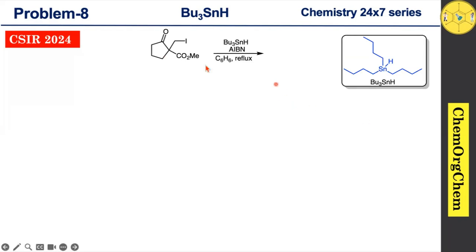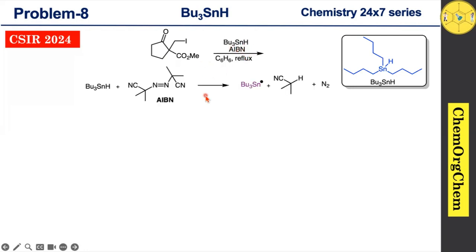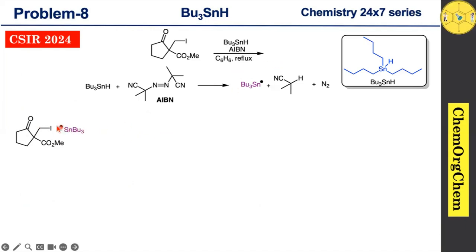When you take tributyltin hydride in the presence of AIBN, it readily produces the corresponding tributyltin radical. This tributyltin radical reacts with our substrate — here you can see the tributyltin radical quickly abstracts the iodine atom, resulting in homolytic cleavage of the carbon–iodine bond.